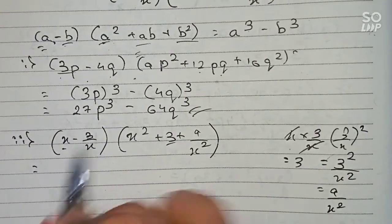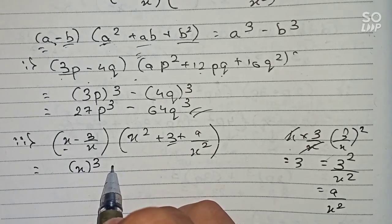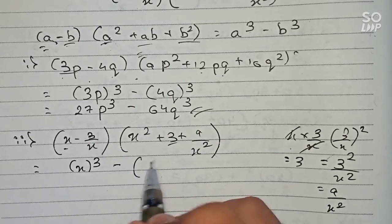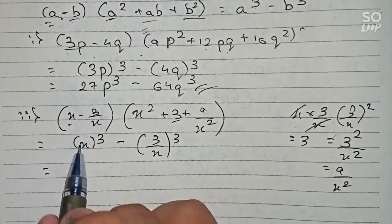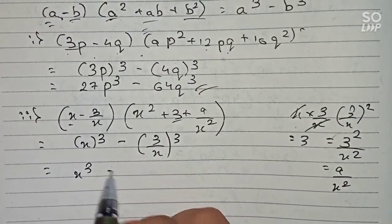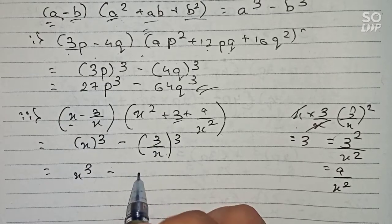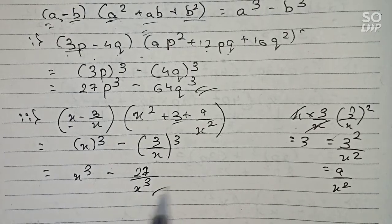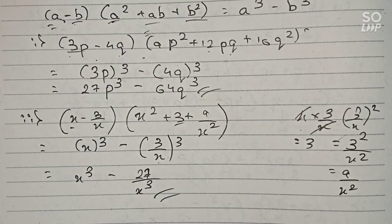So now we can write a cubed minus b cubed: x to the power 3 minus (3 by x) cubed. Simplifying: x cubed minus 3 cubed by x cubed, which equals x cubed minus 27 by x cubed. So x cubed minus 27 by x cubed is our final answer for this question. Thanks for watching this video, and please subscribe to my channel for more solutions.